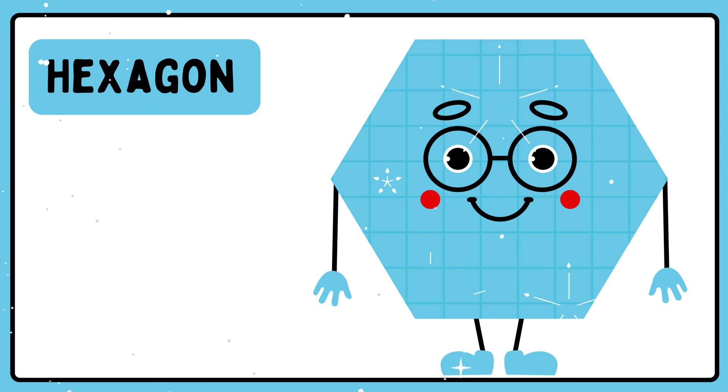This is a hexagon. Hexagon has six sides, six angles and six vertices. All sides of the hexagon have to be equal in length.